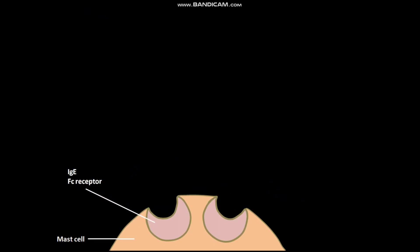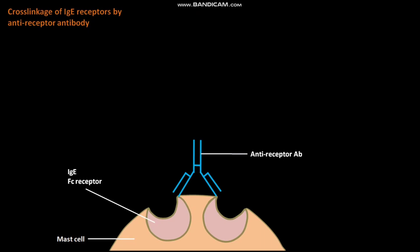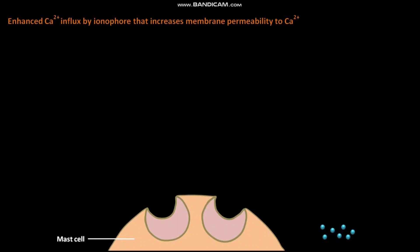We will now discuss mast cell degranulation by cross-linkage of IgE receptors by anti-receptor antibody. During this process, the anti-receptor antibody binds to two IgE Fc receptors present on the surface of the mast cell in such a way that the IgE Fc receptors are cross-linked by the anti-receptor antibody. The mast cell then undergoes degranulation.